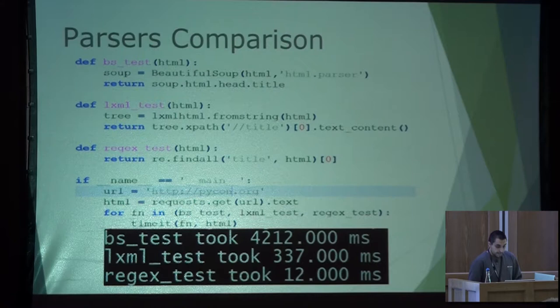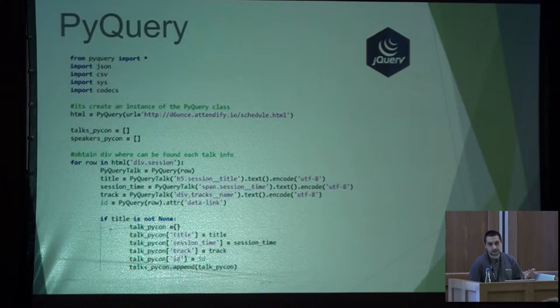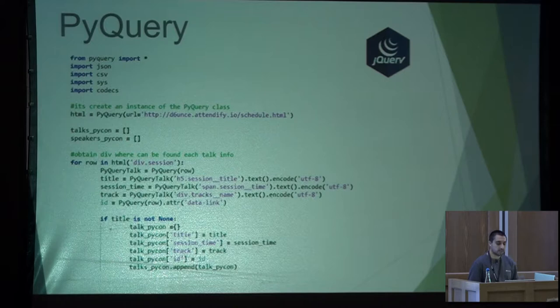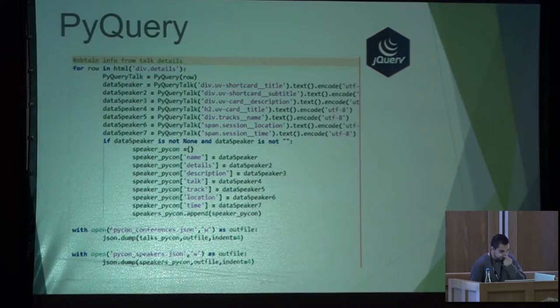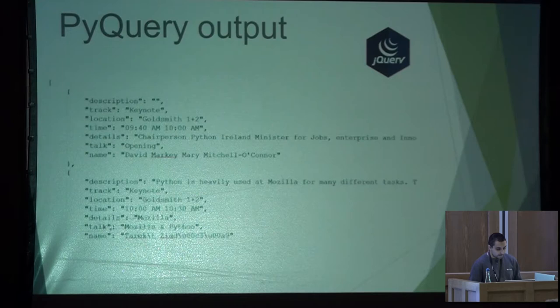Another solution is PyQuery. PyQuery is like BeautifulSoup — it's a parser. But in this case, for extracting information, we use jQuery syntax. For example, if we want to extract information about the session of the conference, we use the syntax div.session, and inside this div is all the information we want to extract. In this way, we can extract all information in a JSON format, and the output is the same as we have seen before.